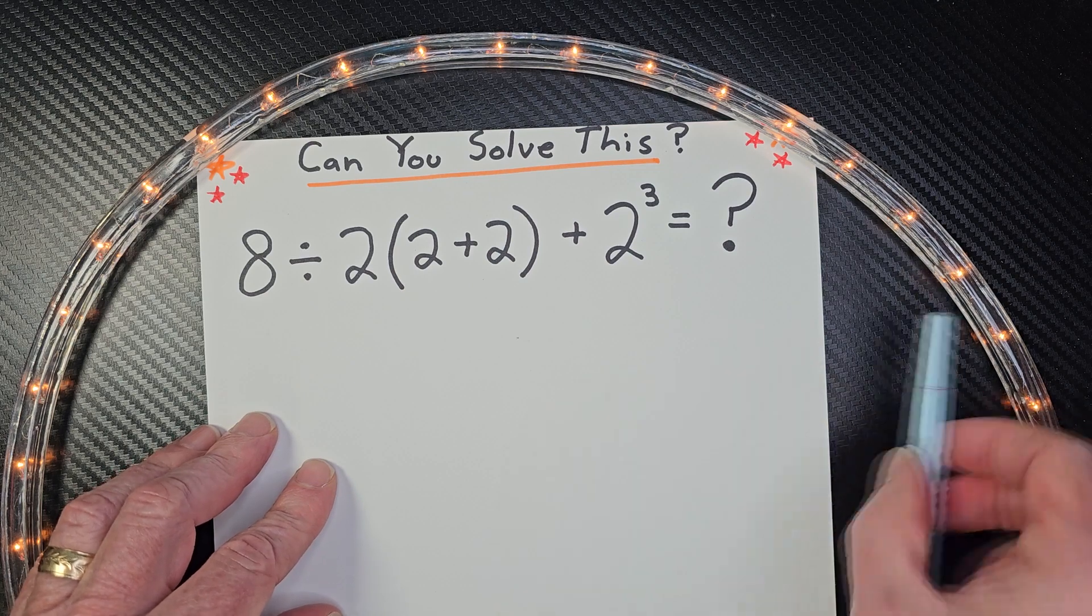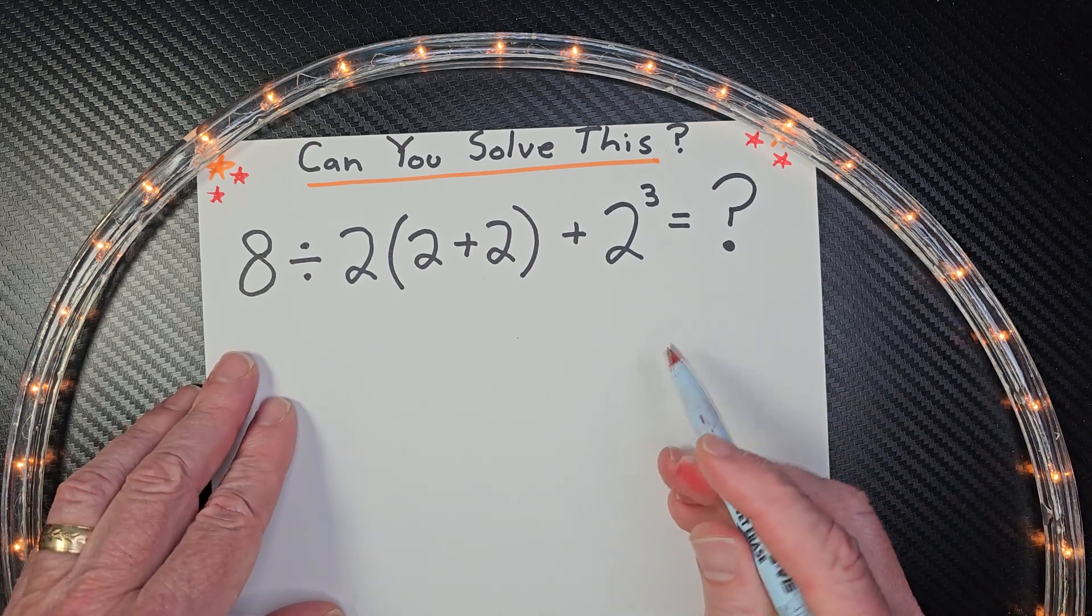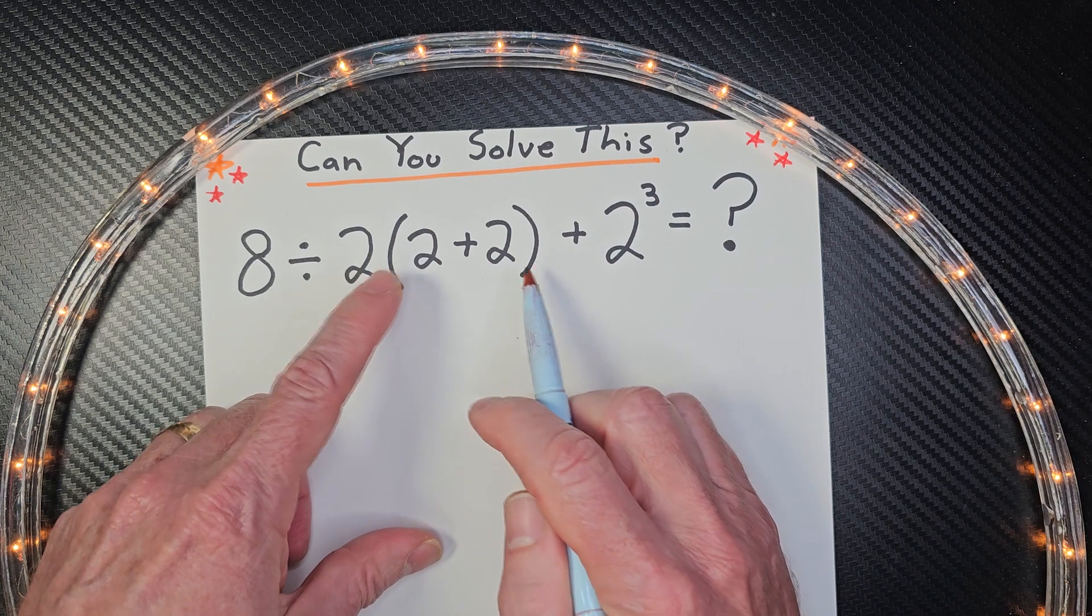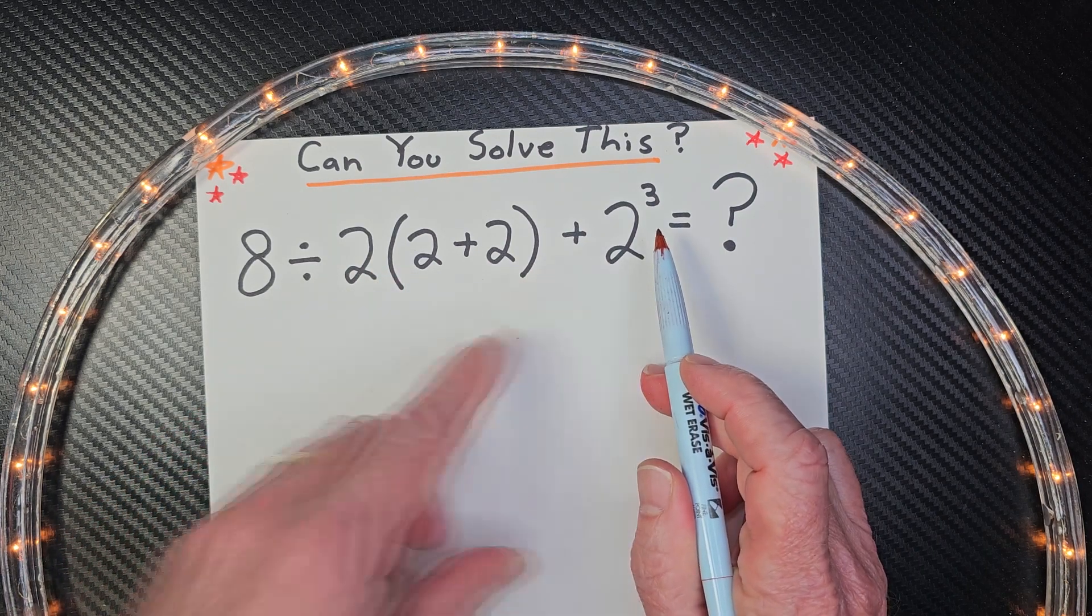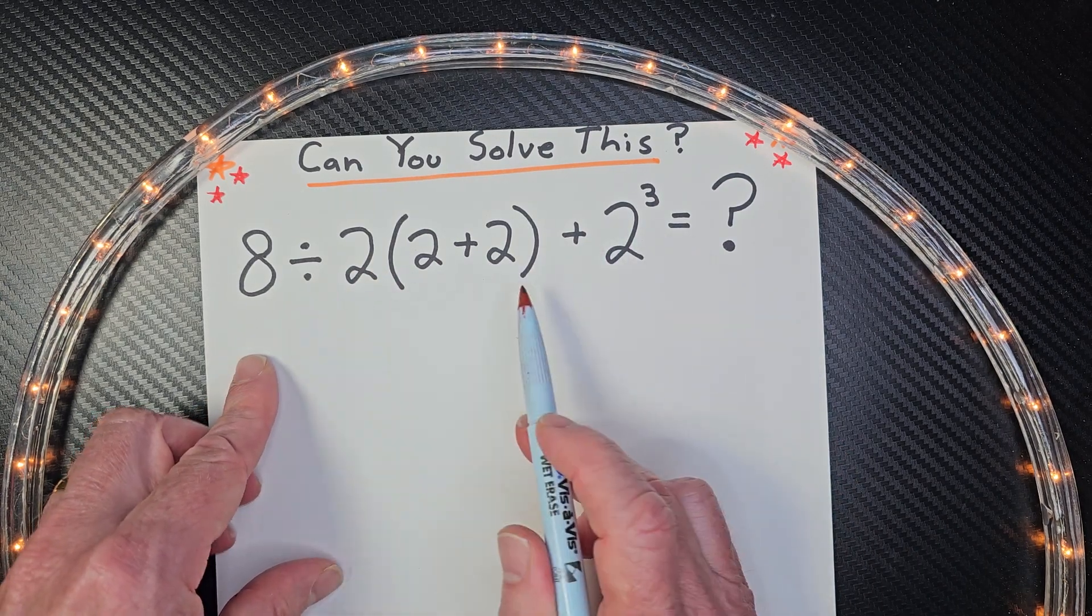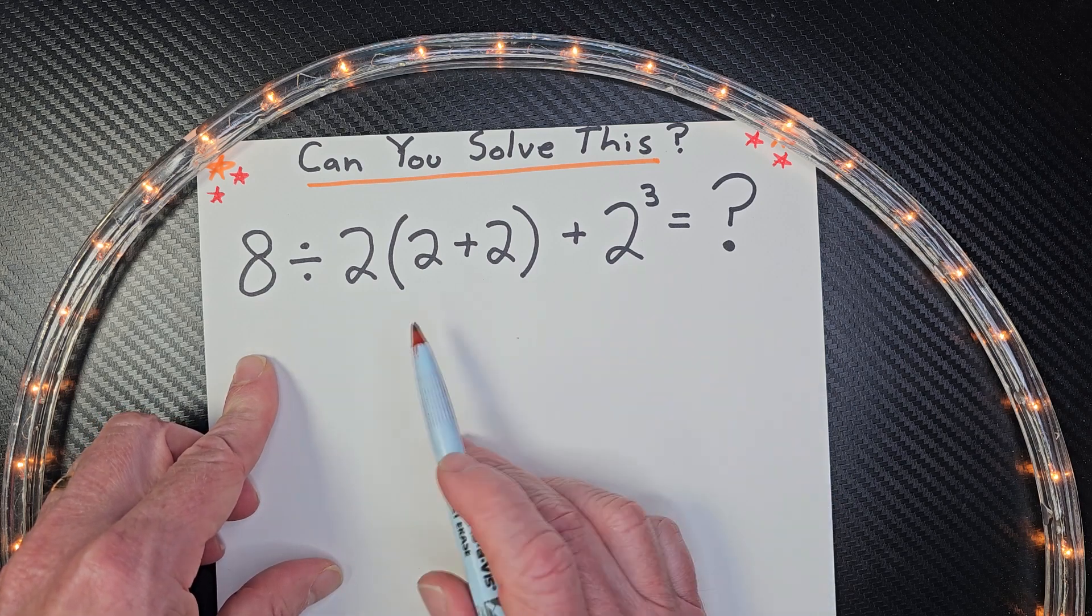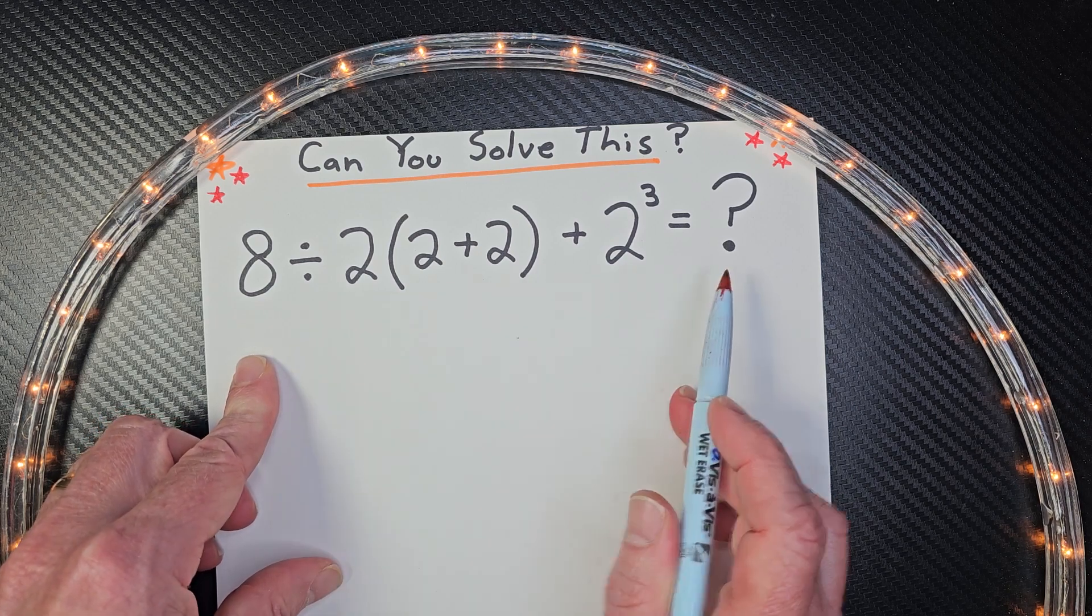All right, let's go ahead and begin. Remember, with order of operation, we do what's inside parentheses first, then our exponents, and then we do multiplication and division from left to right, and addition and subtraction from left to right.